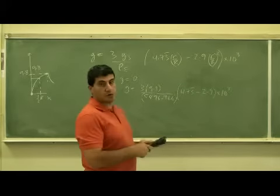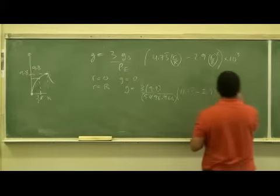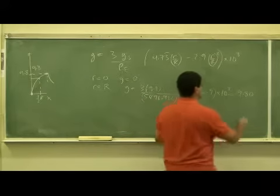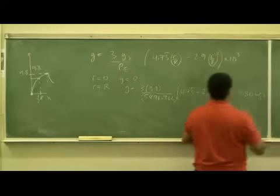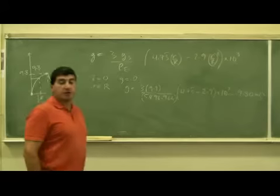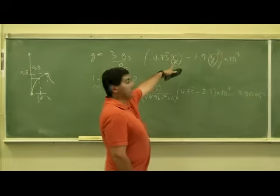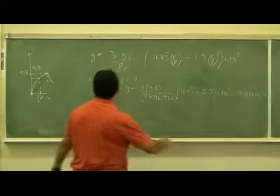9.80. So it does work with some rounding and stuff. Meters per second squared. So it is a continuous function. So now we can check any ratio. We can check little r is equal to half of R. So what would that be?